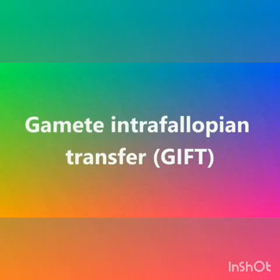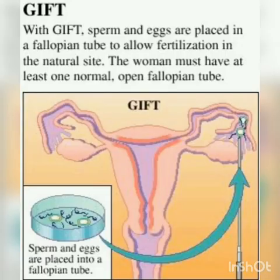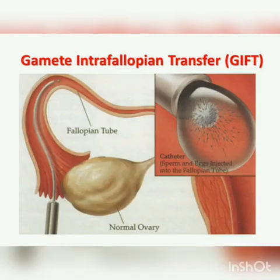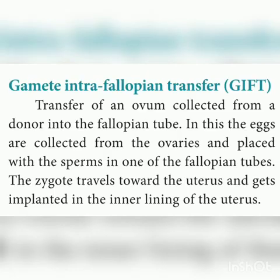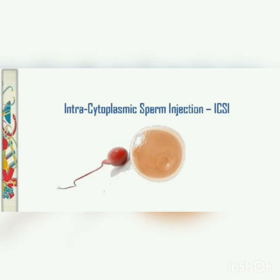Next is gamete intrafallopian transfer, GIFT. This involves the transfer of an ovum collected from a donor into the fallopian tube. The egg is collected from the ovaries and placed together with sperms in one of the fallopian tubes. The zygote then travels towards the uterus and gets implanted in the inner lining of the uterus.